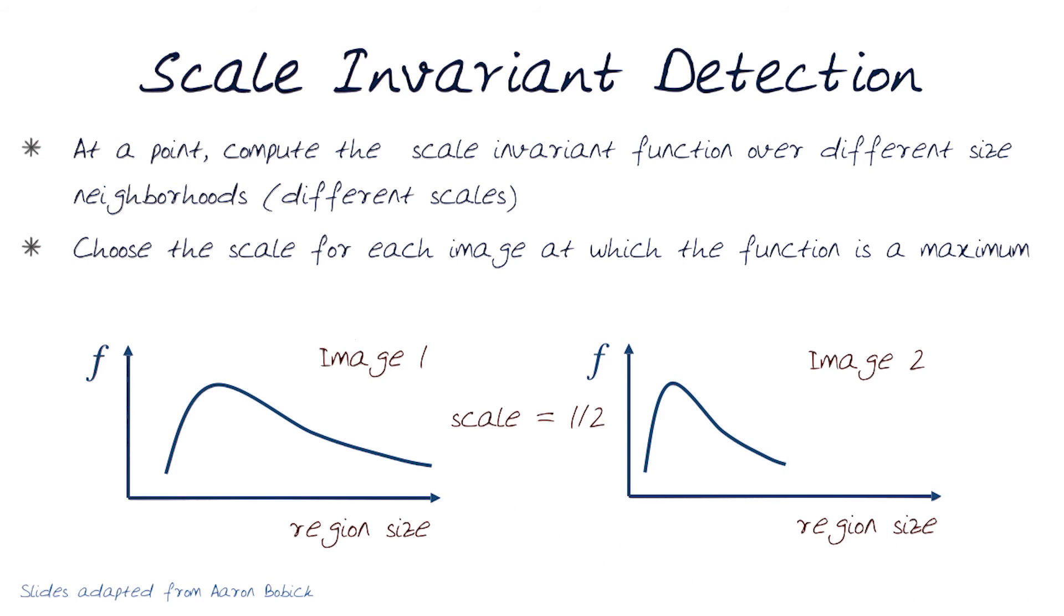Now I have an image that's half the size of the object. If I take the region size and measure the function that changes, it'll have the same peak, but it'll be doing it much faster, just because the image is at half scale.